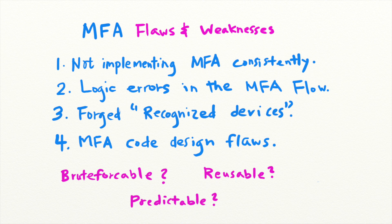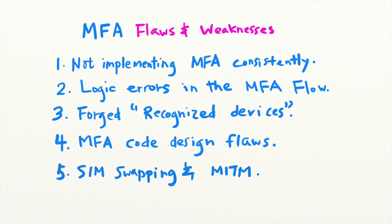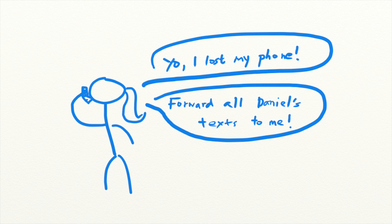Even if the MFA implementation is faultless, attackers might also be able to bypass MFA by using a technique called SIM swapping. SIM swapping involves the attacker calling the phone company of the victim, lying to them, and getting the victim's calls and texts forwarded to their device — for example, by saying that they are the owner of the number and that they have lost their phone. This way, they can receive the MFA code belonging to the victim.